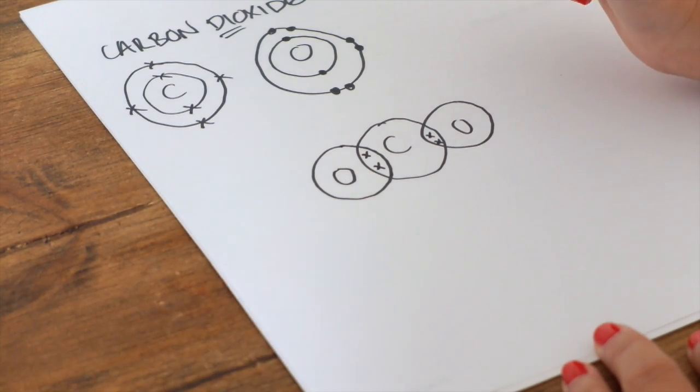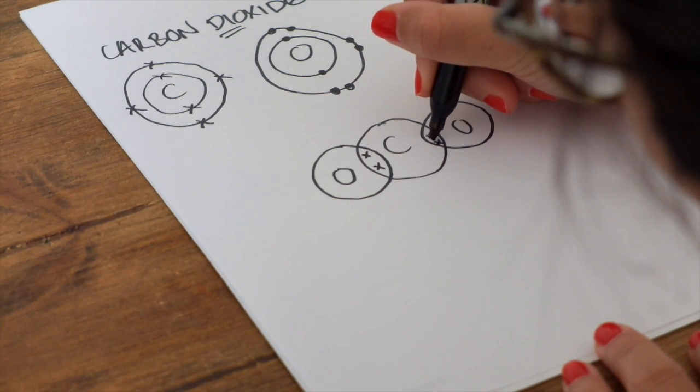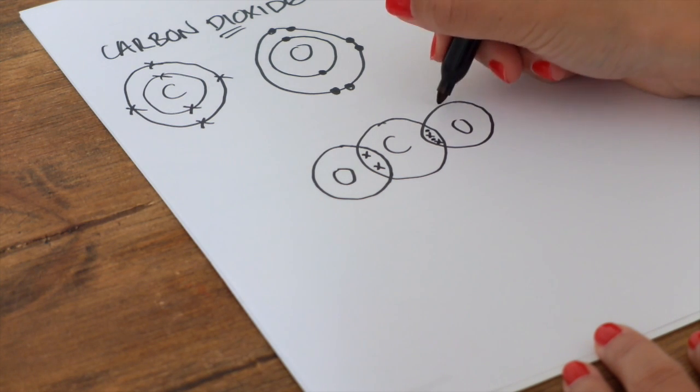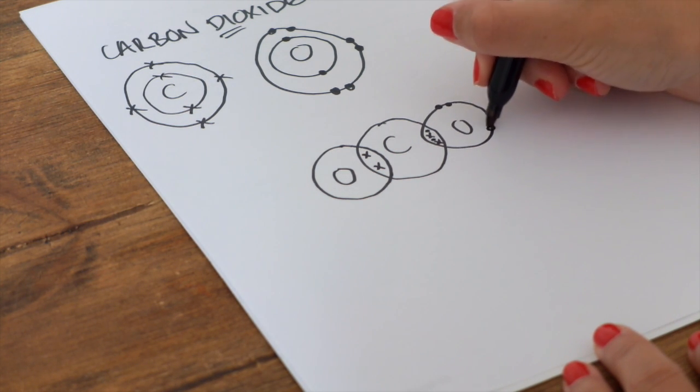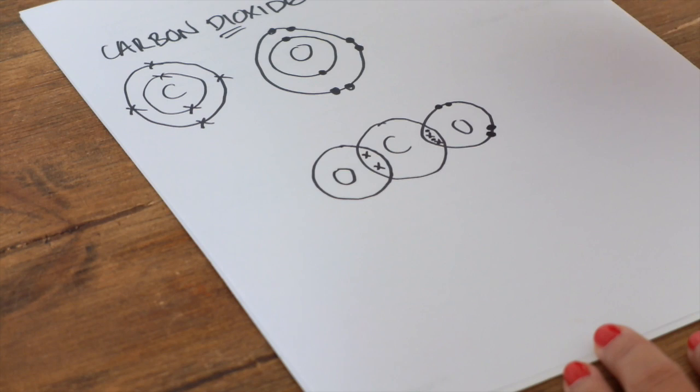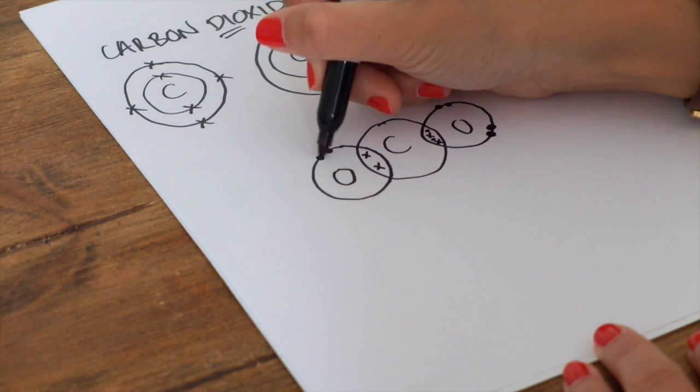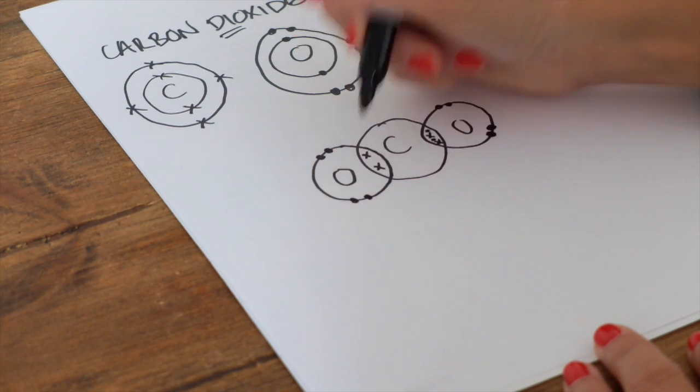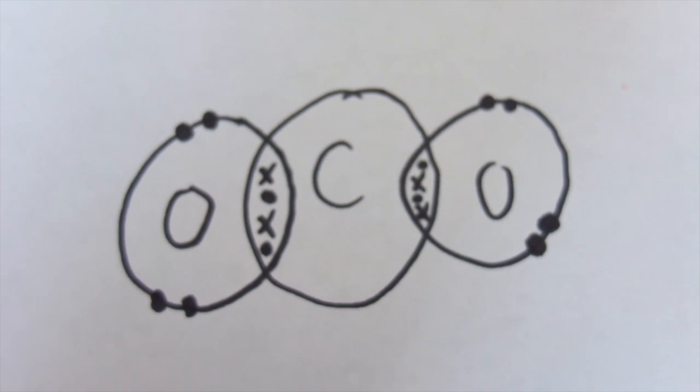And oxygen has six electrons in its outer shell. So I know that carbon needs another four, so I'm going to put one in here, one in here. So that's one, two, three, four, five, six. And let's make sure that we keep it symmetrical and do exactly the same on the other side. All right, so there's our final example.